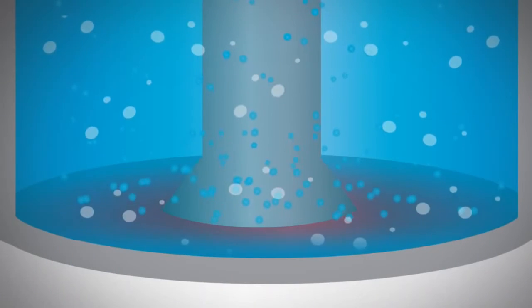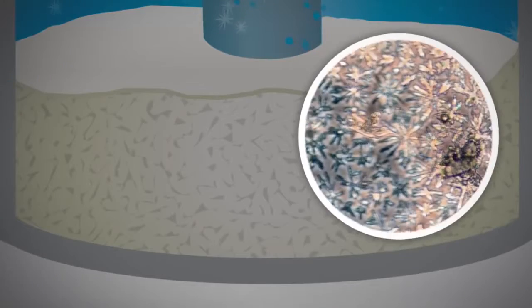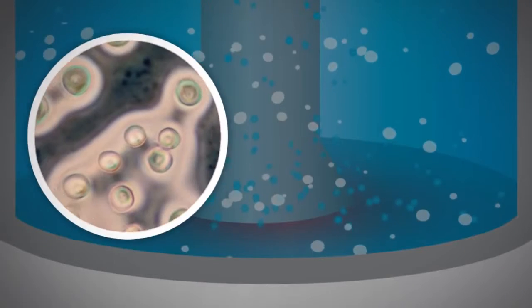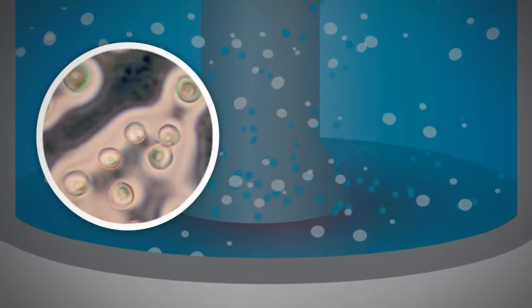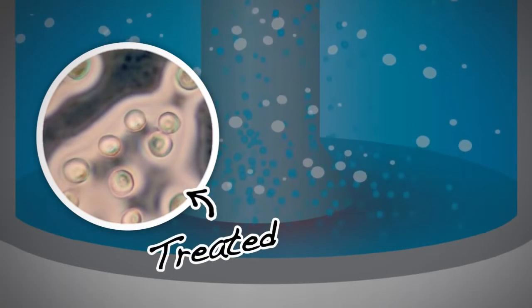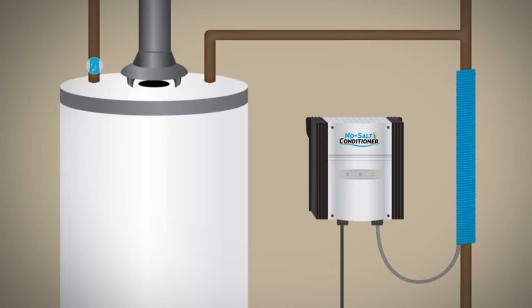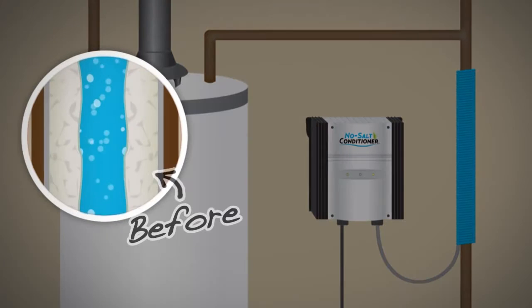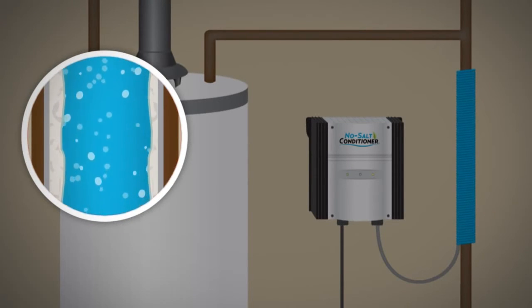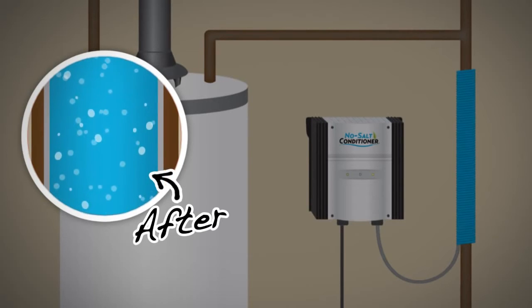This forces some of the mineral ions to come out of solution. Instead of the sticky tree branch shape that results in scale buildup, the minerals form a disc shape that no longer sticks to plumbing, faucets, or appliances. As a result, the water is not as saturated with mineral ions. This not only prevents new scale from forming, but allows room in the water to dissolve existing scale and remove it from your plumbing and appliances, improving their life expectancy.